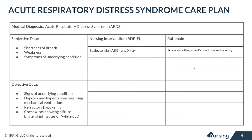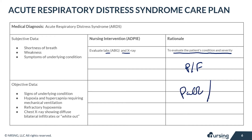For nursing interventions, first ensure that labs and x-rays are completed so you and the doctor can evaluate the patient's condition and severity. If the P/F ratio isn't already in the lab work, determine it by dividing PaO2 by FiO2. This will allow you to assess whether the hypoxemia is unresponsive to treatment, indicating ARDS.